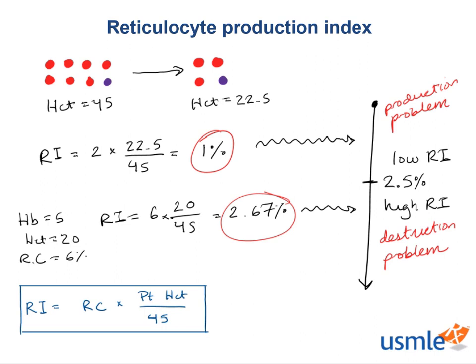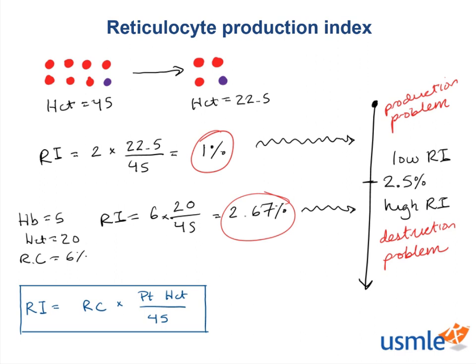This brings us to our final point, which we'll represent in the form of a flash quiz, calling back to our video on anemia. I'll go down a list of pathologies and I want you to tell me if you expect a high or low reticulocyte index for each: autoimmune hemolytic anemia, aplastic anemia, chronic kidney disease, and sickle cell anemia. Take a few moments, pause the video, and then we'll come back and talk about it.